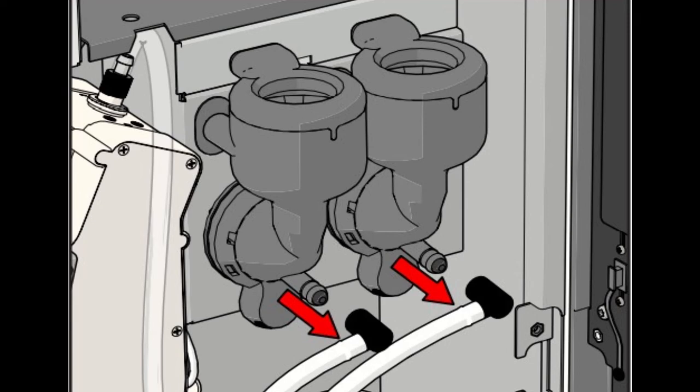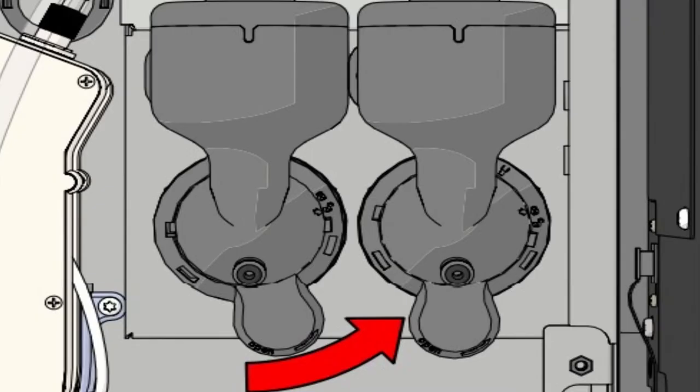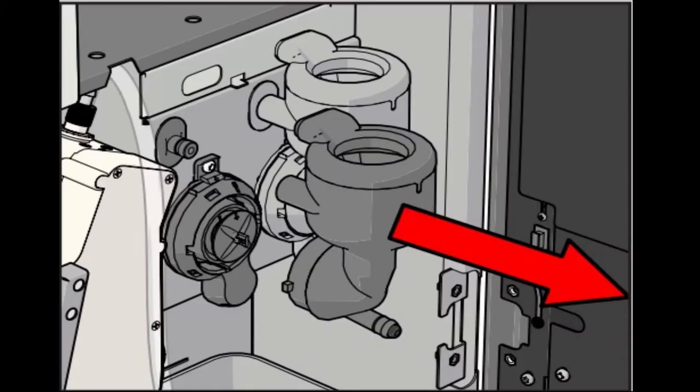Detach the spout tubes from the mixers. Turn the mixer ring counterclockwise to the unlock position. Pull the mixer house and the suction ring forward so they detach from the mixer plate.